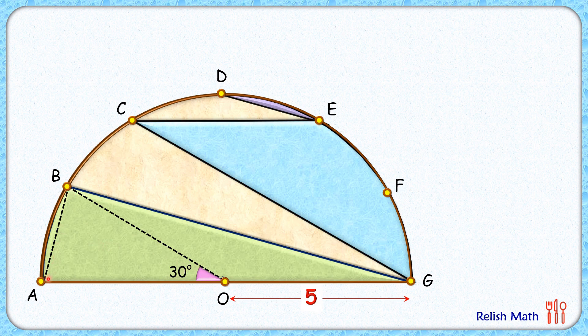Thus, if triangle BAO has area x centimeter square, then BOG will also have area x centimeter square. Now AB chord and DE chord are equal in length, and thus by theorem the segment areas will be equal.